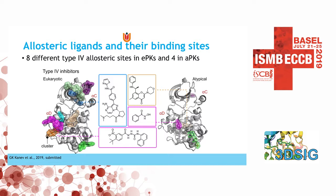We further analyzed the allosteric ligands as well. However, CLIPS is designed for the orthosteric ATP binding site, so you cannot do this systematically in CLIPS. However, the data is there, so you can download it and make plots like this yourself — here we see eight hydrophobic binding sites for the eukaryotic ligands and four for the atypical ligands.